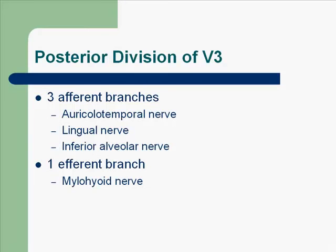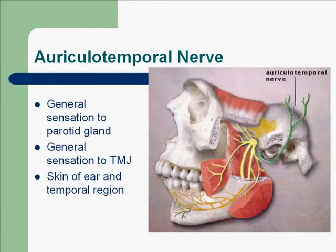The posterior division of V3 has three afferent branches: the auriculotemporal nerve, the lingual nerve, and the inferior alveolar nerve. The auriculotemporal nerve provides general sensation to the parotid gland, the TMJ, the skin of the ear, and the temporal region. Remember that this is a sensory nerve.